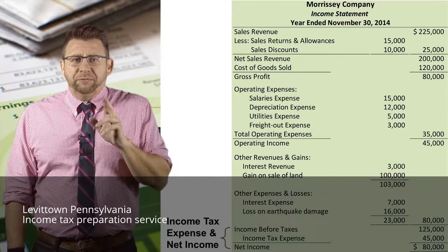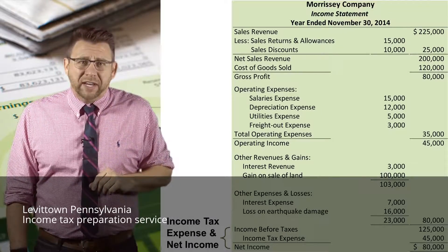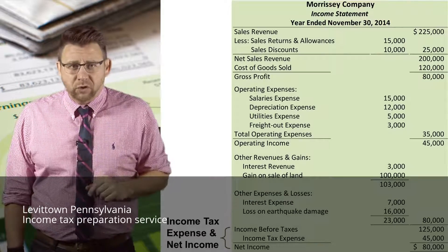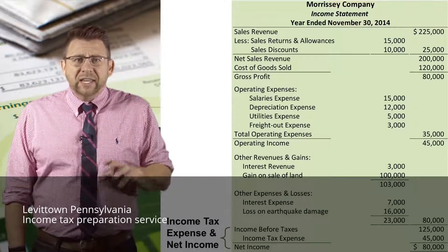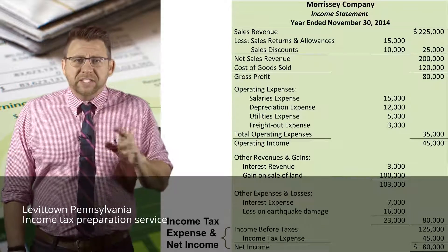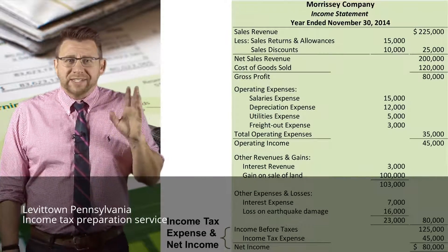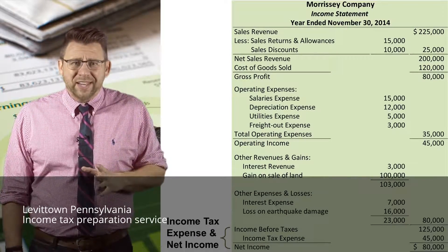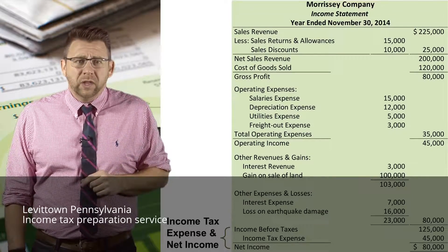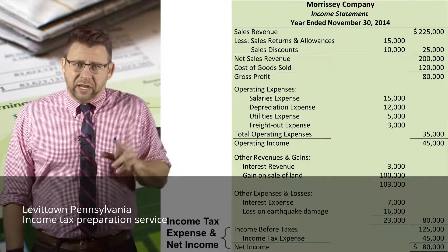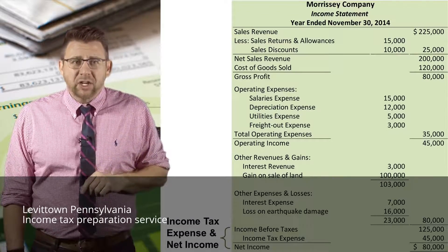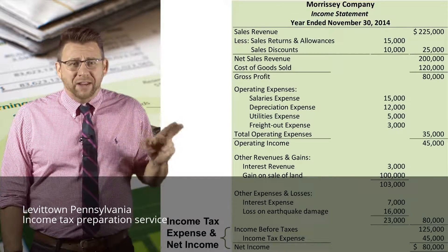The final section before we arrive at net income — at least for an accounting principles course — is the income tax expense section. This expense is reported separately from all other expenses because it's the expense that managers have the least control over. Income tax expense is deducted from income before taxes to arrive at net income.